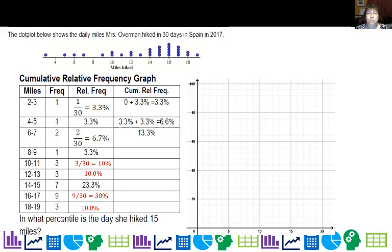Now the cumulative relative frequency is really with a new definition like the percentile. So if I look at the cumulative relative frequency for miles two and three, I include all the points at or below. So one divided by 30 is 3.3%. So the percentile for that is 3.3%.